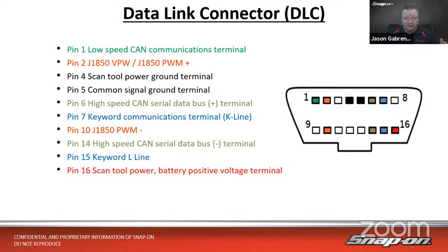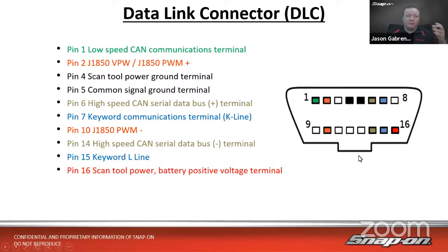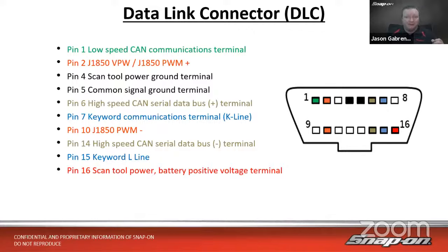How will we access the networks to test them? The majority of the time you don't want to be breaking wiring harnesses apart. We want to plug into the diagnostic connector — usually the easiest place to get to those data lines. For the purposes of this part of the course, we want to concentrate on pins 4 and 5, which are ground; pin 16, which is always power; and then pins 6 and 14, which would be our main CAN bus for the vehicle.